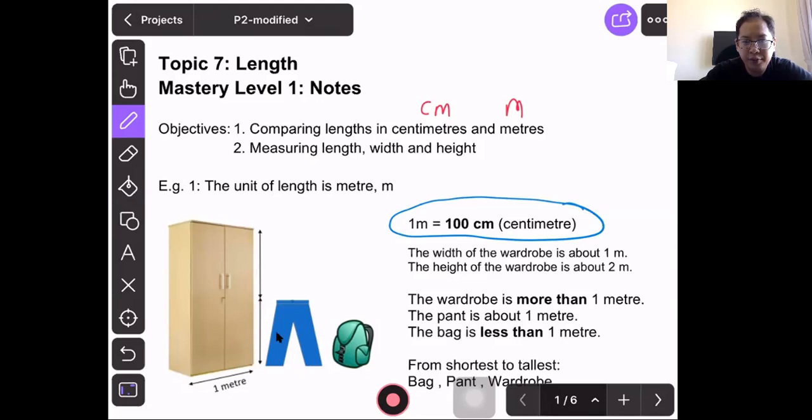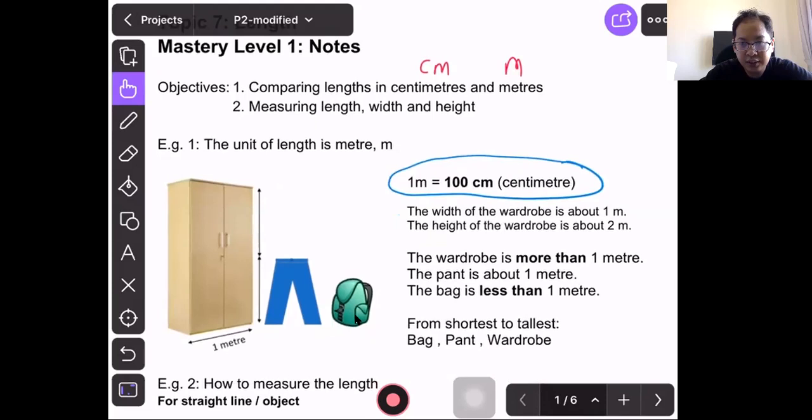This is how we compare with the object. If the question asks you to arrange the things from shortest to tallest, you will arrange according to this order: bag is the shortest, followed by the pants, followed by the wardrobe.